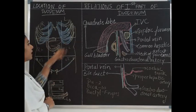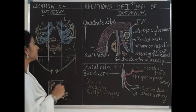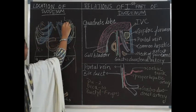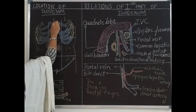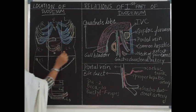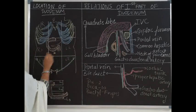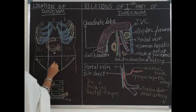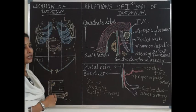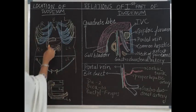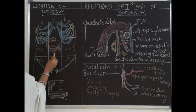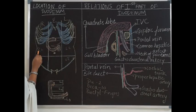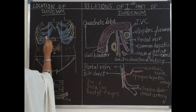To understand the location, we divide the abdomen into 9 quadrants: right hypochondrium, left hypochondrium, epigastrium in the middle, then right lumbar, left lumbar, umbilical region in the middle where the umbilicus is present, then right iliac, left iliac, and hypogastric region.